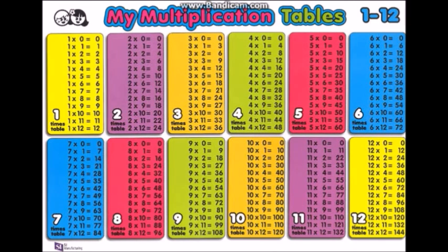6 x 0 is 0, 6 x 1 is 6, 6 x 2 is 12, 6 x 3 is 18, 6 x 4 is 24, 6 x 5 is 30, 6 x 6 is 36, 6 x 7 is 42, 6 x 8 is 48, 6 x 9 is 54, 6 x 10 is 60, 6 x 11 is 66, 6 x 12 is 72.